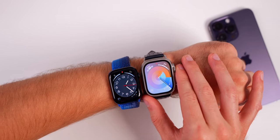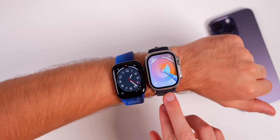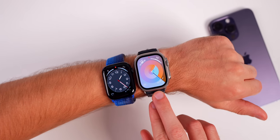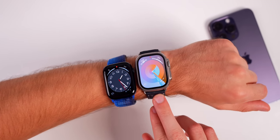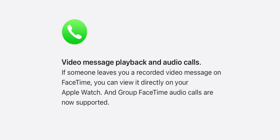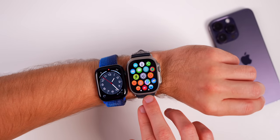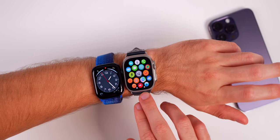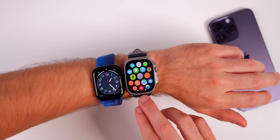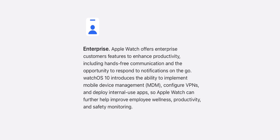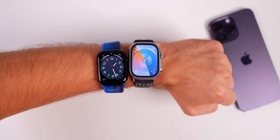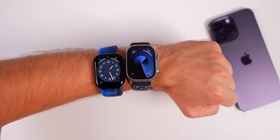Unlocking your Mac with your Apple Watch is now much faster with macOS Sonoma installed — pretty much instant compared to Ventura. Also new in WatchOS 10, you can now receive group FaceTime audio calls, which were not supported before. You can also view FaceTime video messages — a new iOS 17 feature where if someone doesn't pick up you can leave a video message, and you can now watch those on your Apple Watch. Finally, enterprise users can add MDM configuration profiles to deploy apps and configure VPNs.